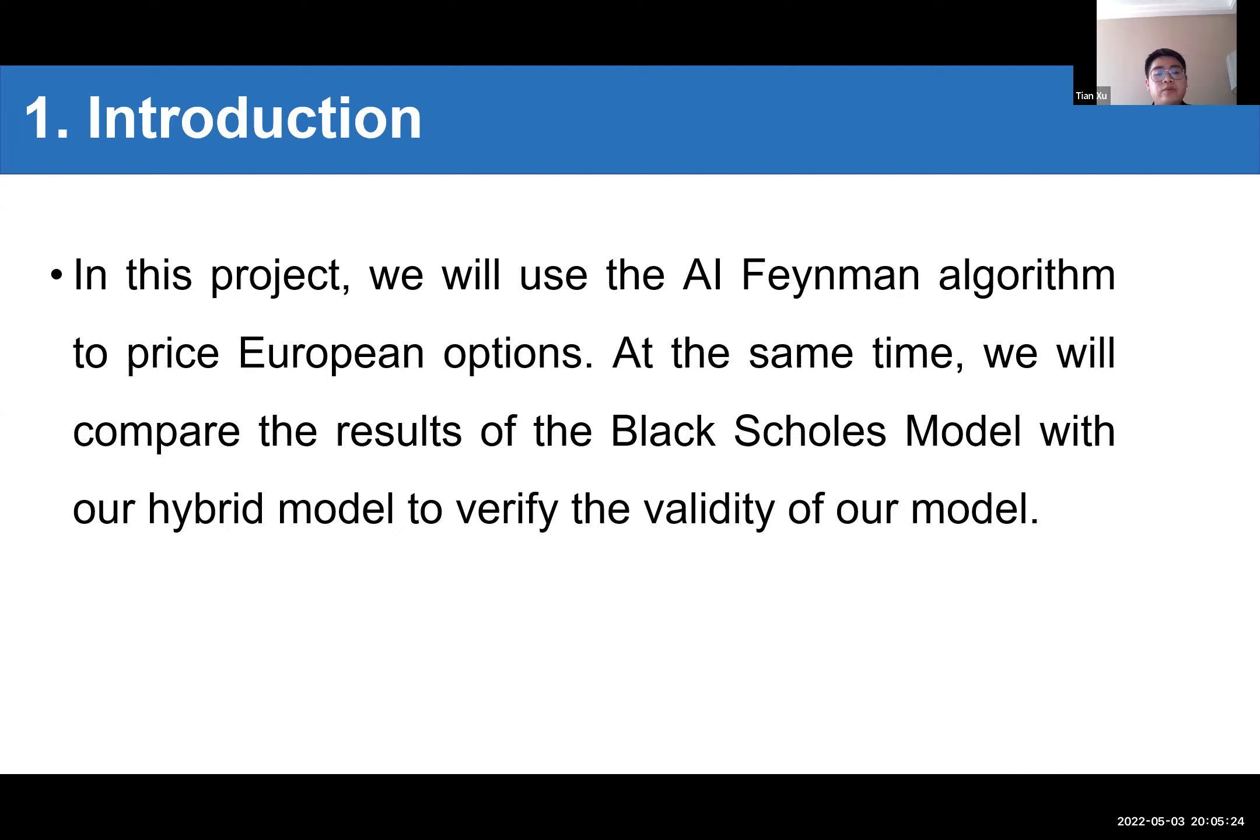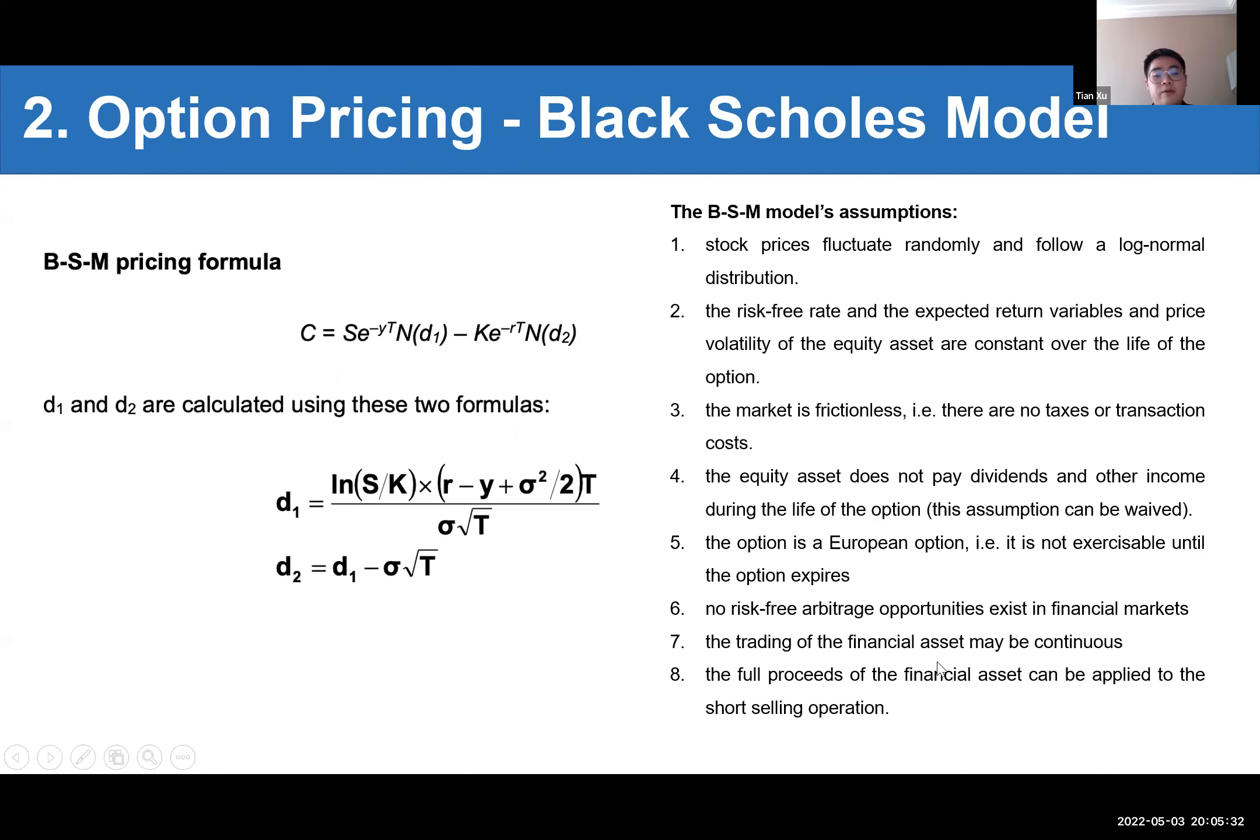As we know, Option Pricing models have been a popular area of research in the field of financial derivatives. The earliest Option Pricing model is known as the Black-Scholes model, which gave the first complete pricing method for European options. Here is the BSM pricing formula. But actually, the derivation of the equations of the BSM model was based on many assumptions that were not present in practice. Like here, there are a lot of assumptions, but some cannot be met in the real world.